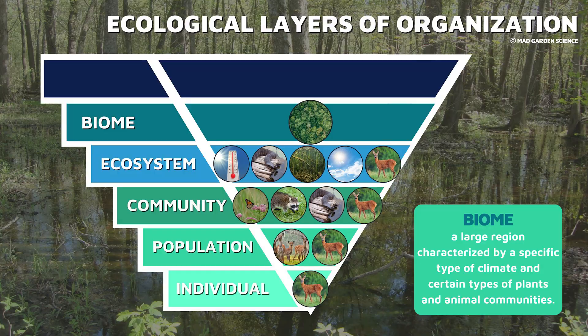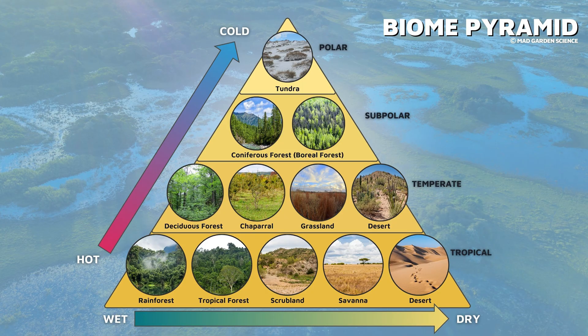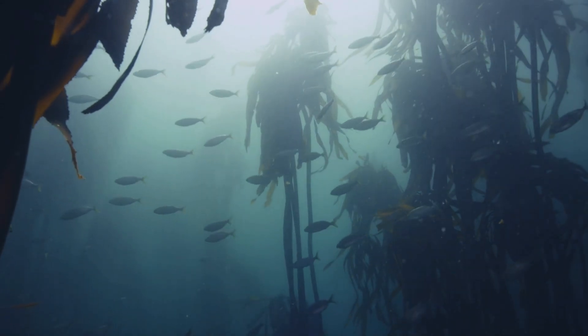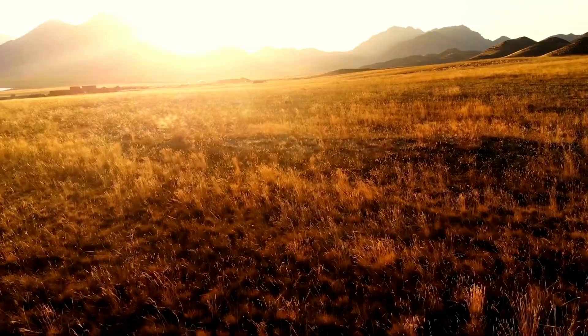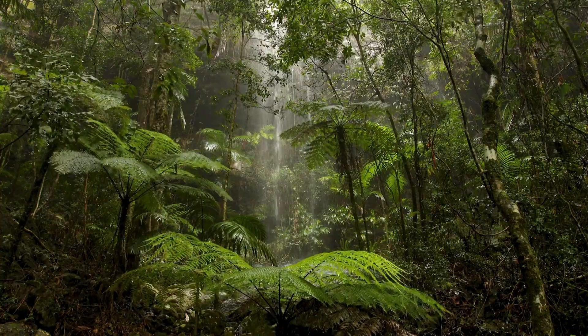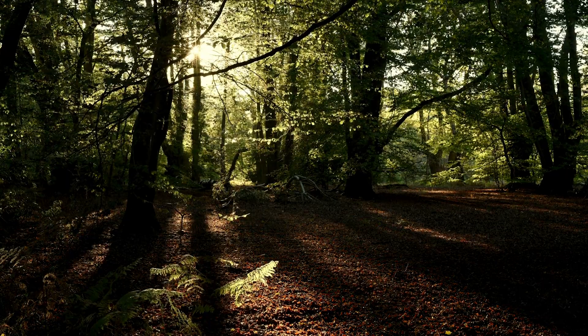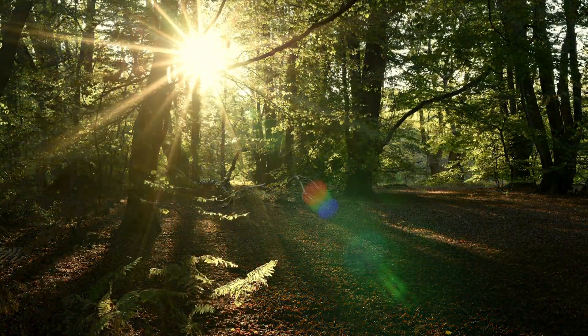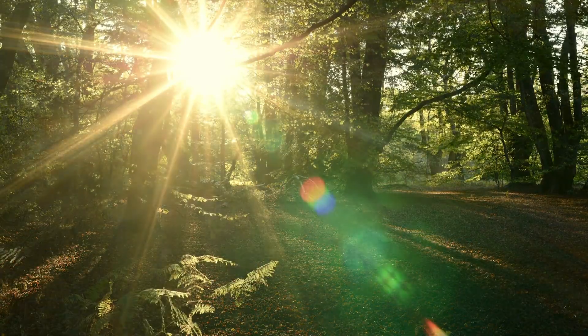If we keep zooming out, we will find biomes — large regions of ecosystems sharing a similar climate. Earth contains a diverse variety of biomes, including aquatic biomes, grasslands, deserts, rainforests, the tundra, and temperate forests where our deer lives.